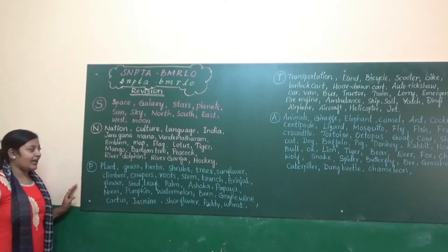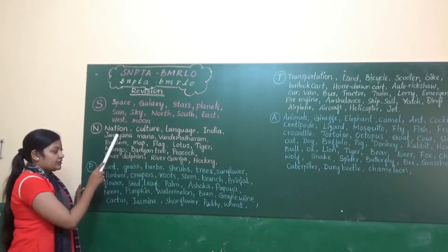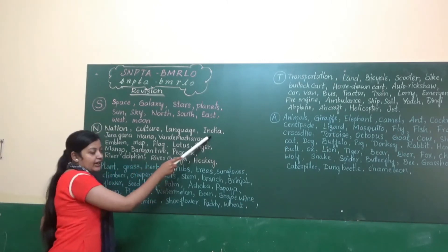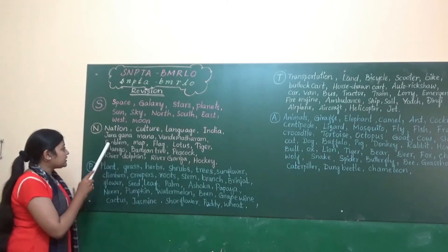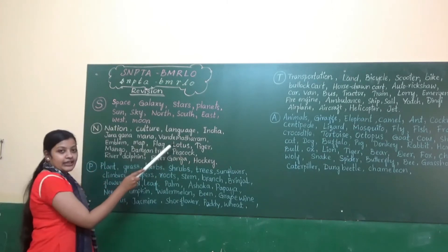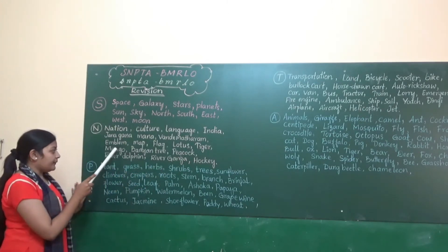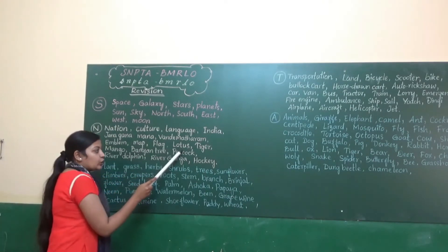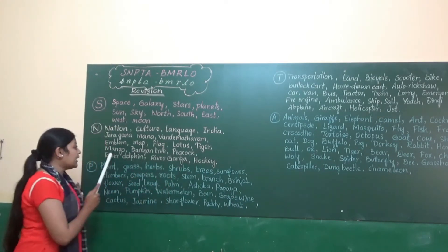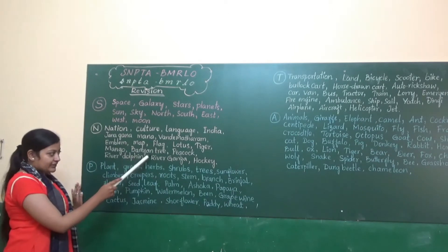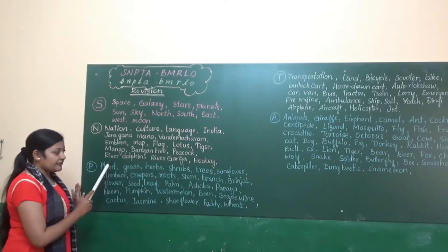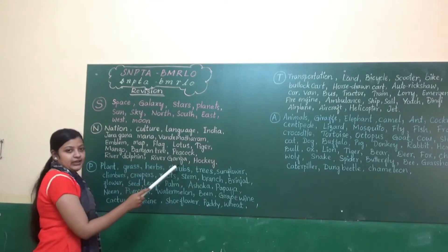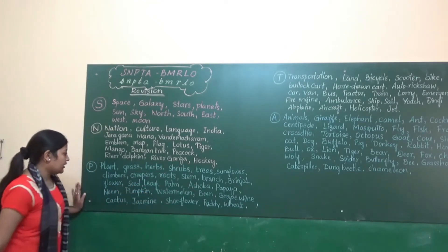Next we will go with the N — Nation: culture, language, India, Jana Gana Mana, Vande Mataram, emblem, map, flag, lotus, tiger, mango, banyan tree, peacock, river, dolphin, River Ganga.